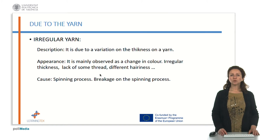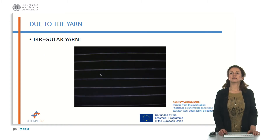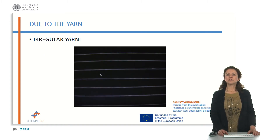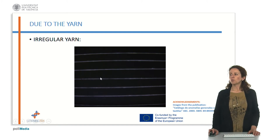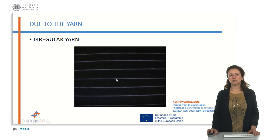So let's move to see how we can observe this defect in the yarn. Here in the image, we can clearly observe that this part, for example, is fatter than this other part, which is thinner.